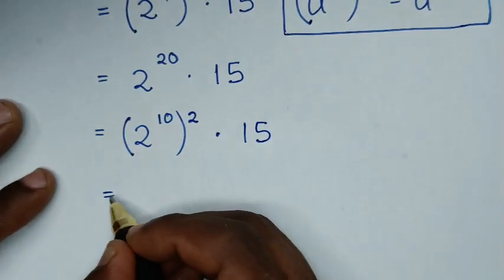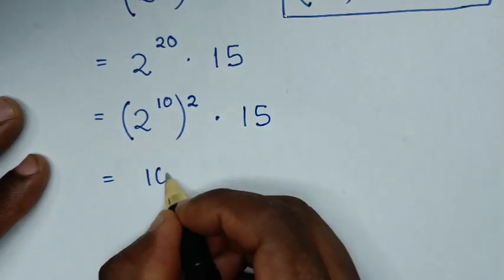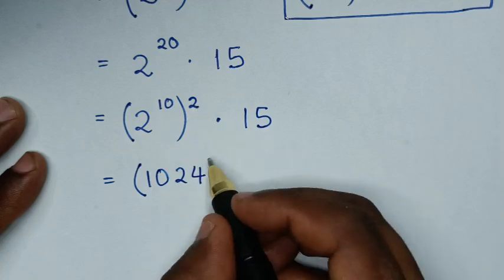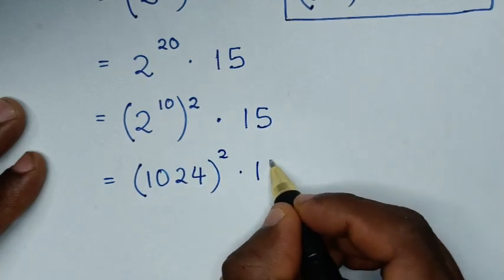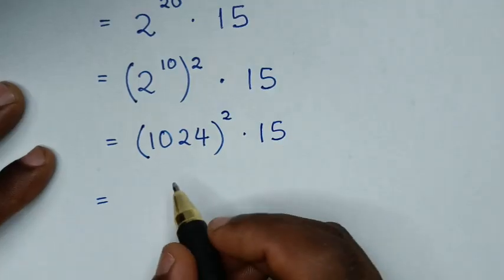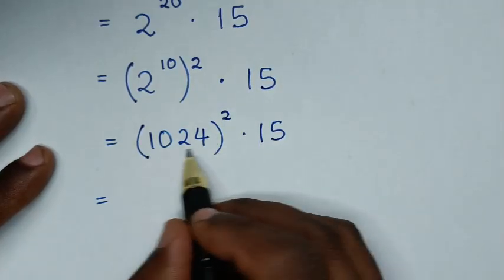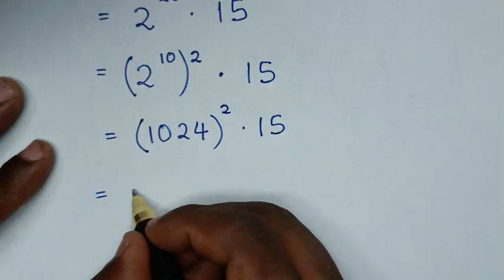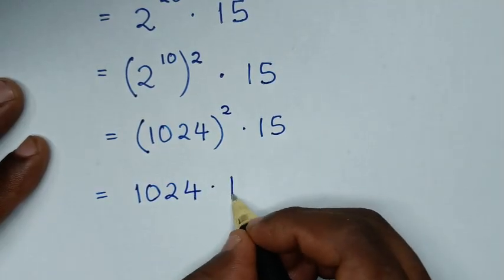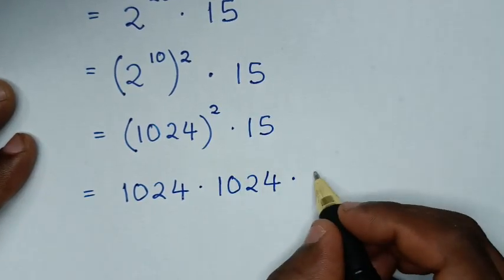Then it will be equal to: from 2 power of 10, which is 1024, bracket this power of 2, then times 15. So it will be 1024 bracket squared, which is the same as 1024 times 1024, then times 15.